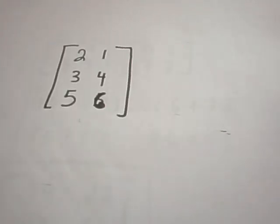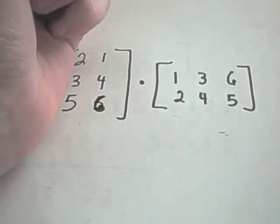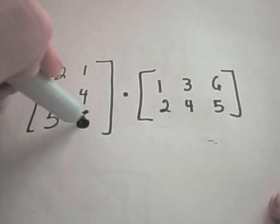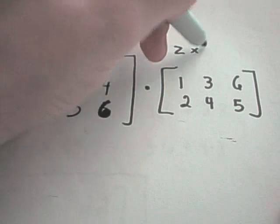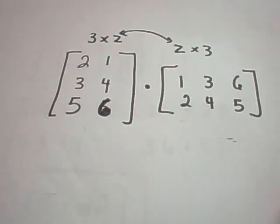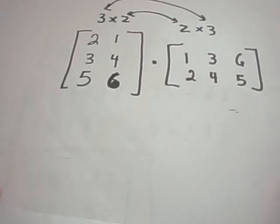Okay, so I've got 2, 3, 5, 1, 4, 6. And then we were multiplying this by 1, 3, 6, 2, 4, 5. Again, if we think about the size of these matrices, the first one is a 3 by 2, the second one is a 2 by 3. Again, the numbers on the inside match up, so we can multiply them. And the final matrix should be a 3 by 3 matrix. And let's see if that does in fact happen here.